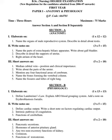Write notes on 5 marks questions. First: name the parts of the extra-hepatic biliary apparatus and write about the gallbladder. Second: describe in detail the supports of the uterus. Third: write about the atrium of the heart.